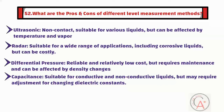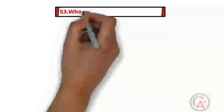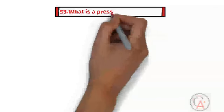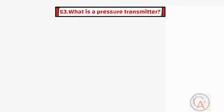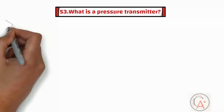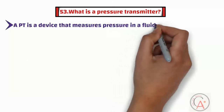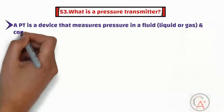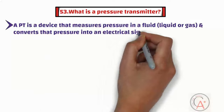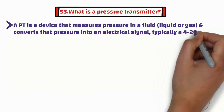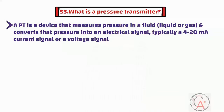Question fifty-three is: what is a pressure transmitter? A pressure transmitter is a device that measures pressure in a fluid such as liquid or gas and converts that pressure into an electrical signal, typically a 4 to 20 milliampere current signal or a voltage signal. This electrical signal can be transmitted to a control system for monitoring and control purposes.